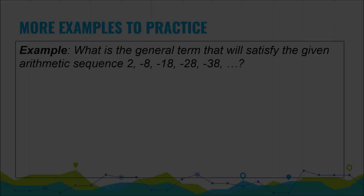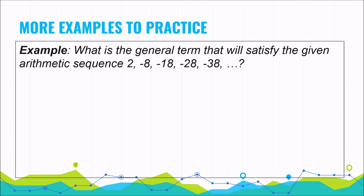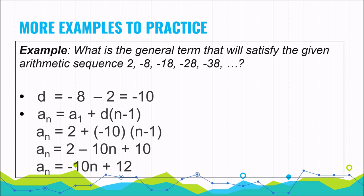What is the general term that will satisfy the arithmetic sequence 2, negative 8, negative 18, negative 28, and negative 38? We will now apply the generated formula. First, compute the common difference, which is negative 10. Substituting into the formula a sub n equals a sub 1 plus d times the quantity n minus 1, with a sub 1 equals 2 and d equals negative 10, in the long run you get a sub n equals negative 10n plus 12.